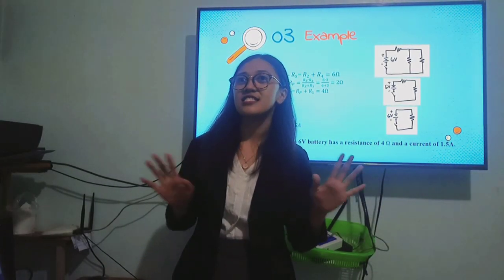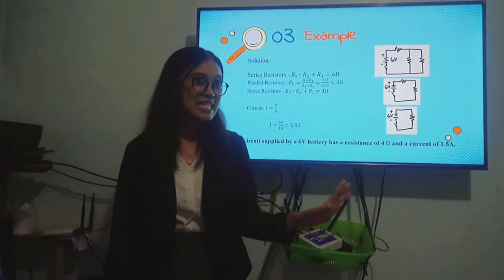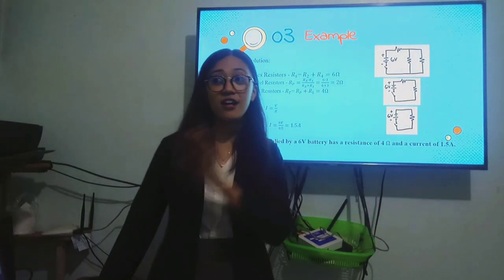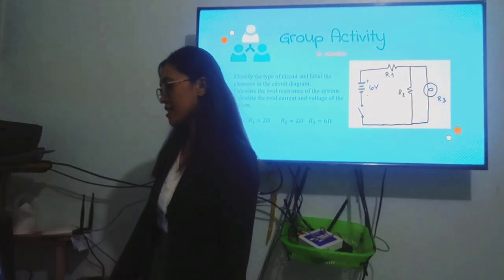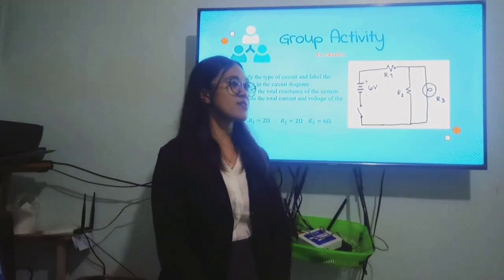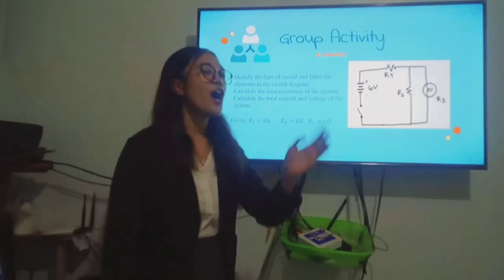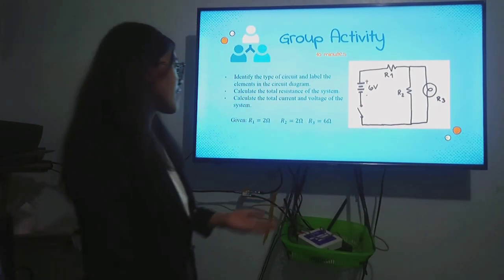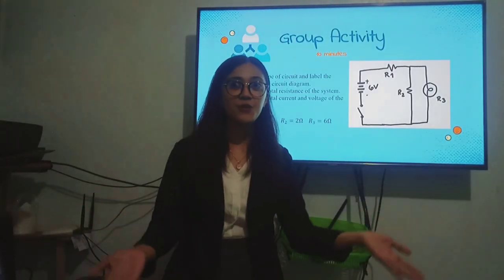Okay, so now, let us apply what we have learned with an activity. Don't worry, this is a group activity. You can help each other and you can also teach each other if your classmates still don't understand the topic. Here is your activity. You solve this in 10 minutes. Group yourselves into 3. This is the instruction. Identify the type of circuit and label the elements in the circuit diagram. Also, calculate the resistance, current, and voltage of the system or the diagram. And this is the circuit. These are the given values. Please start with the activity.